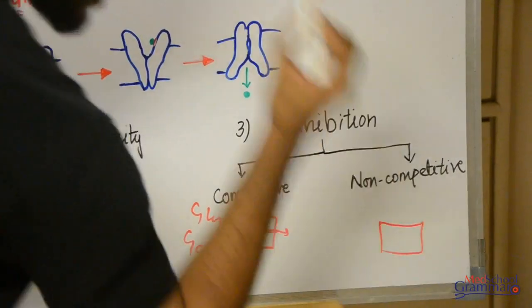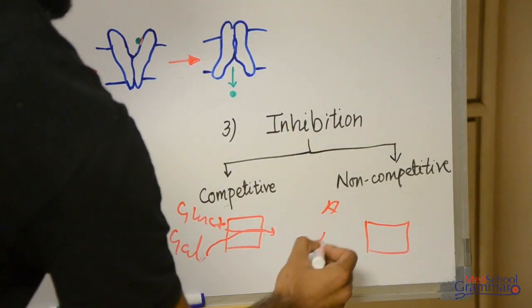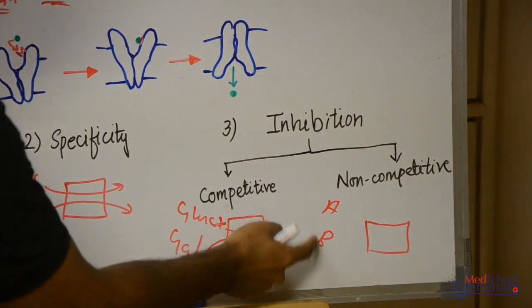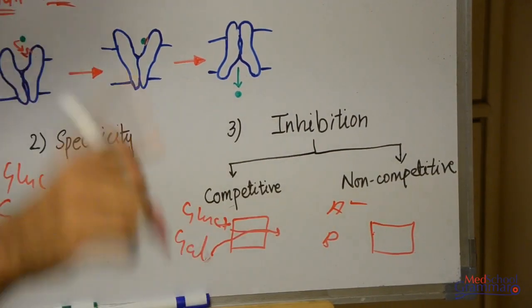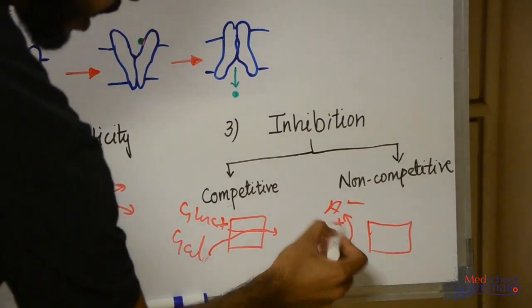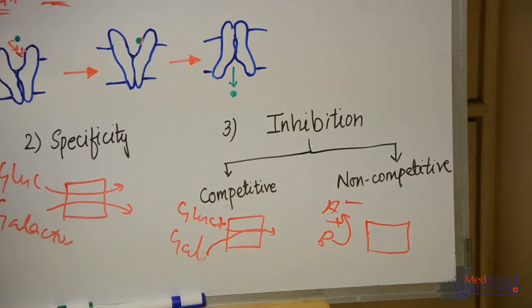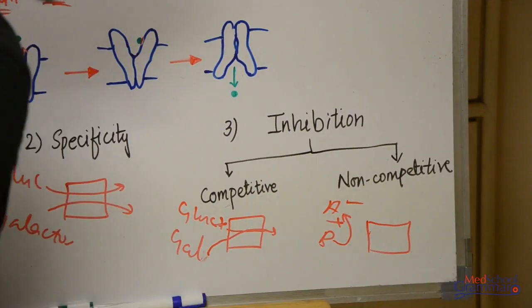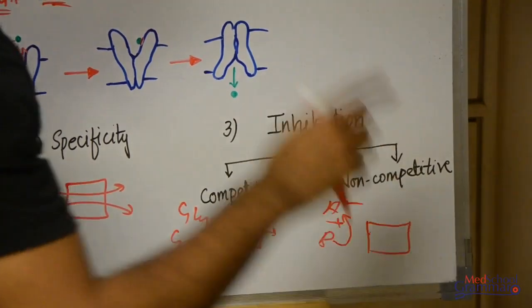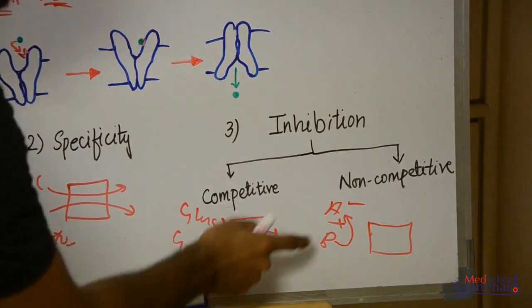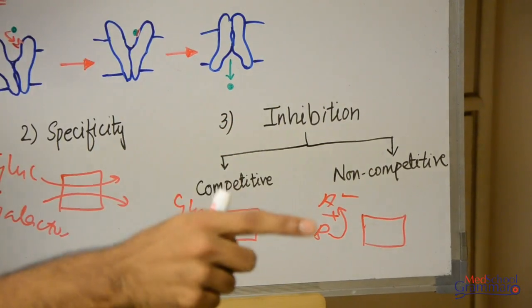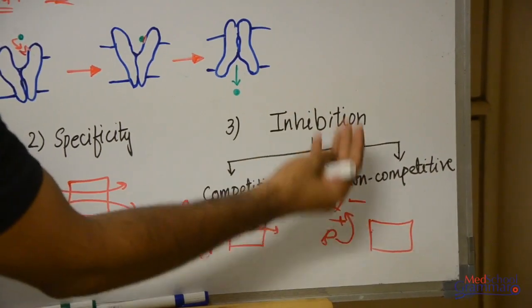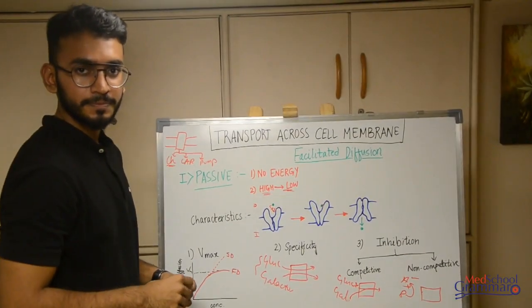Non-competitive inhibition: consider a carrier protein specific for molecule A but not for molecule B. Molecule B cannot be diffused by this carrier protein, so there is no competition. However, just because B is present, it does not allow A to pass through — it inhibits A non-competitively. There is no competition for being diffused, but B's presence still inhibits A's diffusion. That is the concept of non-competitive inhibition. So that completes facilitated diffusion.